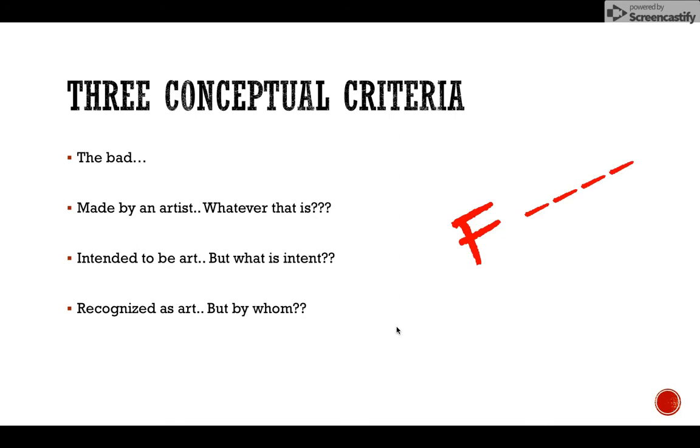Coco the gorilla, you know the one that could do sign language, also painted. Do you think that Coco meant to do that and to make her paintings art? Coco also fails the first criteria because she wasn't a person. She fails criteria two because who knows what she was thinking. I certainly don't.